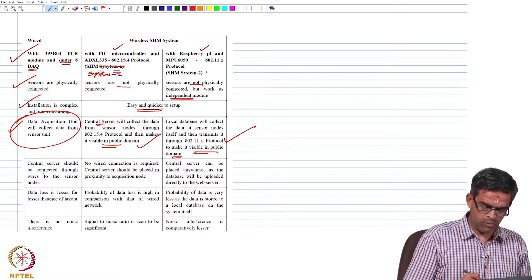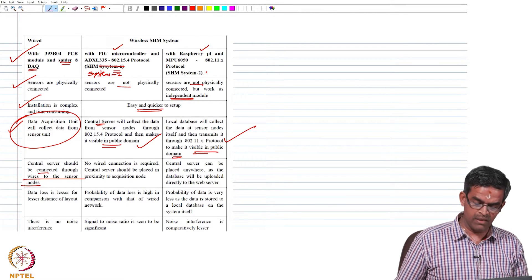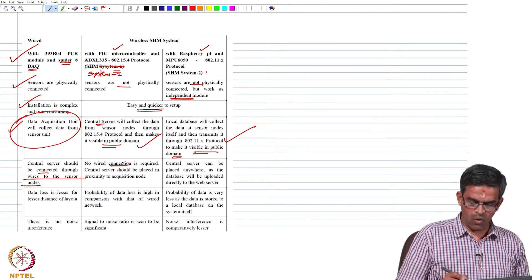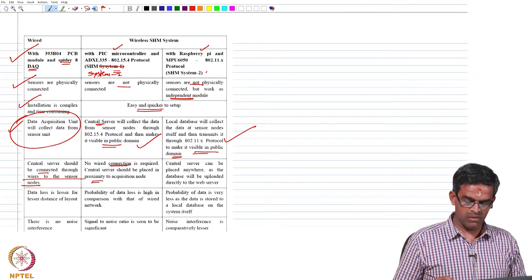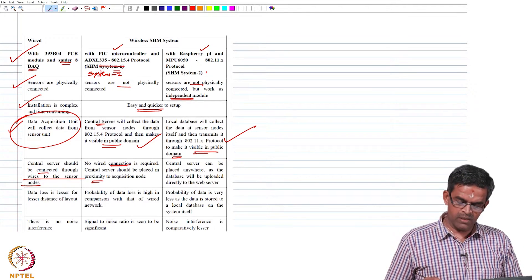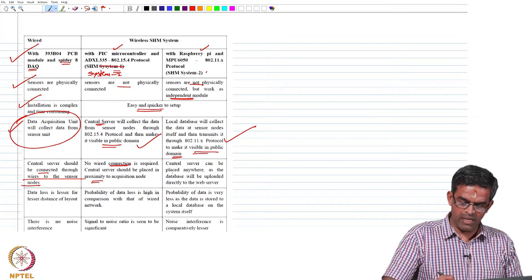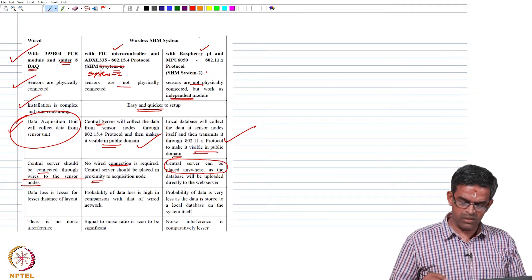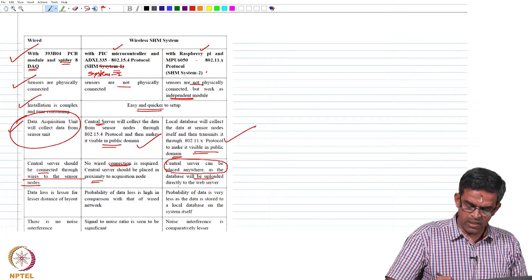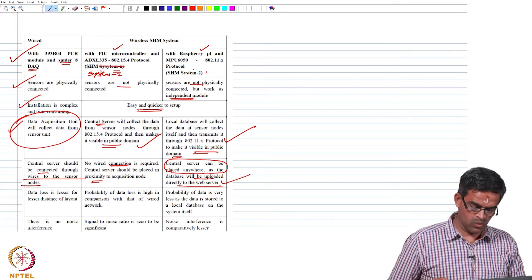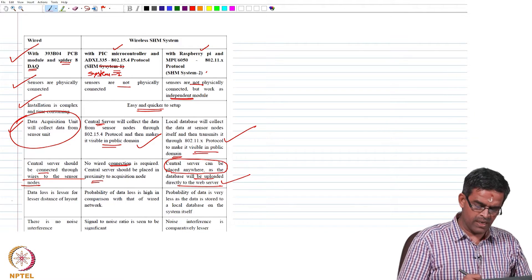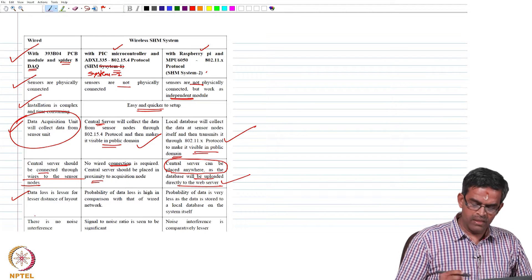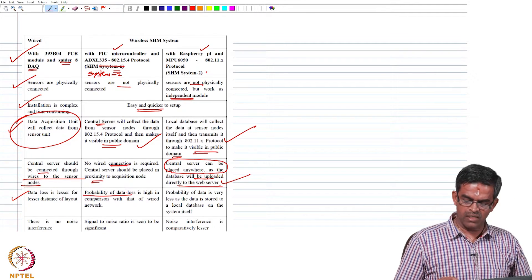The central server should be connected through wires in wired case, whereas no wired connection is required in wireless. The central server should be placed closely in wired because we have a distance restriction, whereas in wireless the central server can be placed anywhere because the database will be uploaded directly to the web server. The data loss is lesser in wired because there is a direct connection between the sensor and the DAQ. There is a high probability of data loss in wireless sensor networking.